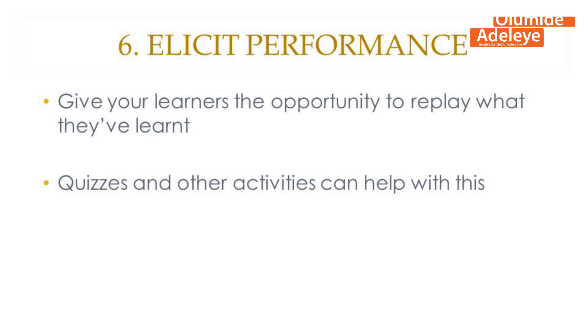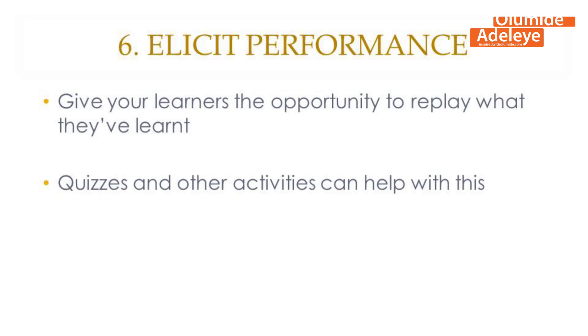Number six is elicit performance. This is basically about allowing your learners to have the opportunity to try out what they've learned — to practice. You can give them quizzes, quick exercises, or even ask them to demonstrate or role play. Whatever you use, make sure that you give them the opportunity to relive what you've taught and let them do it on their own. You might pair them or put them in groups, but make sure each person is participating and that it is done in a way that they will be able to do it when they need to on their own.